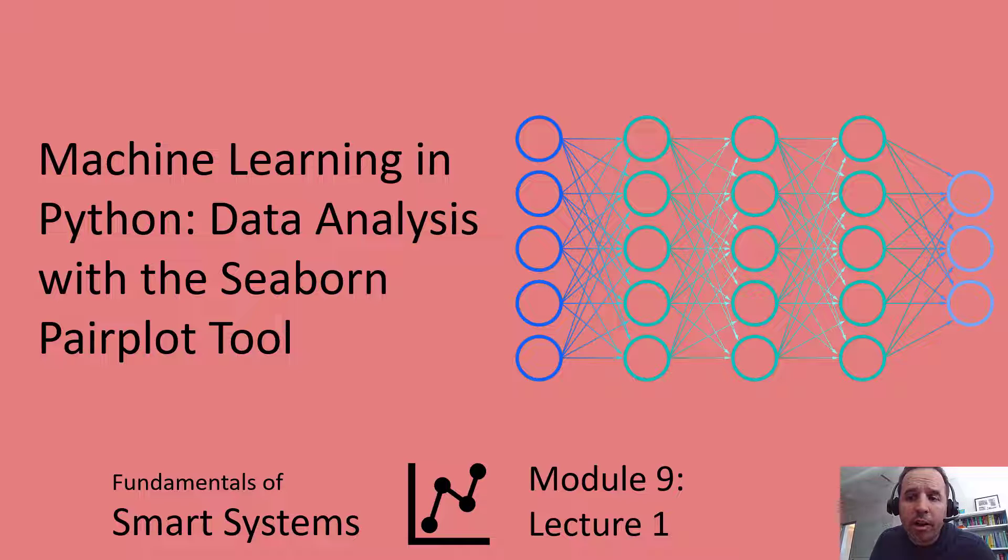In Module 9 specifically we're going to be talking about artificial neural networks. But first I wanted to introduce a couple of useful tools for when you're looking at data that has complex relationships.